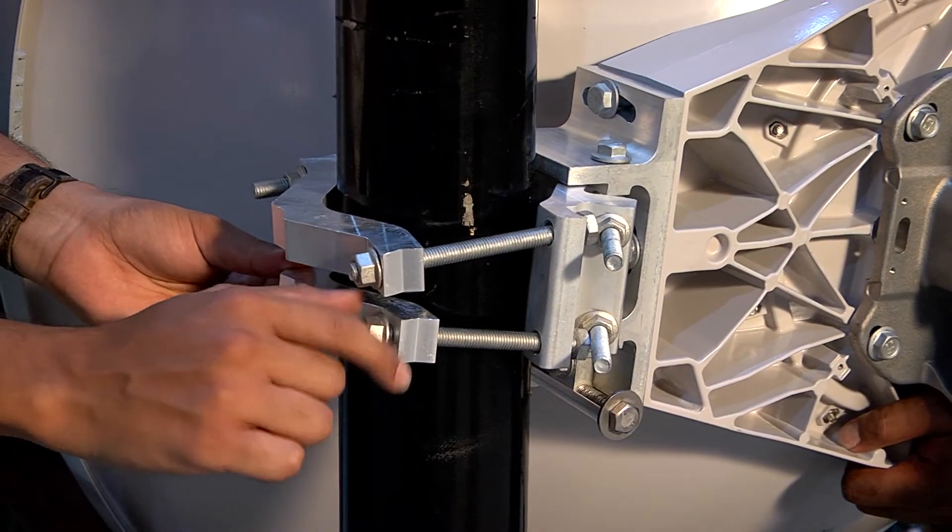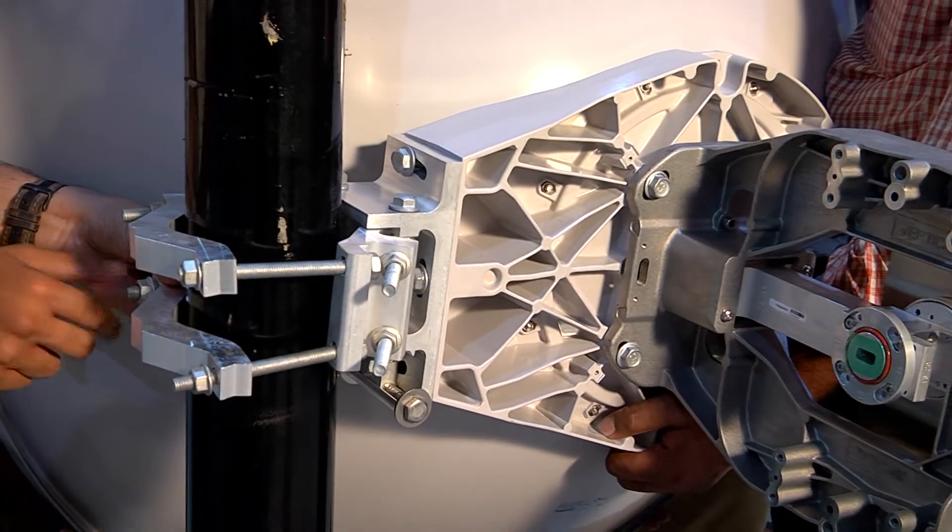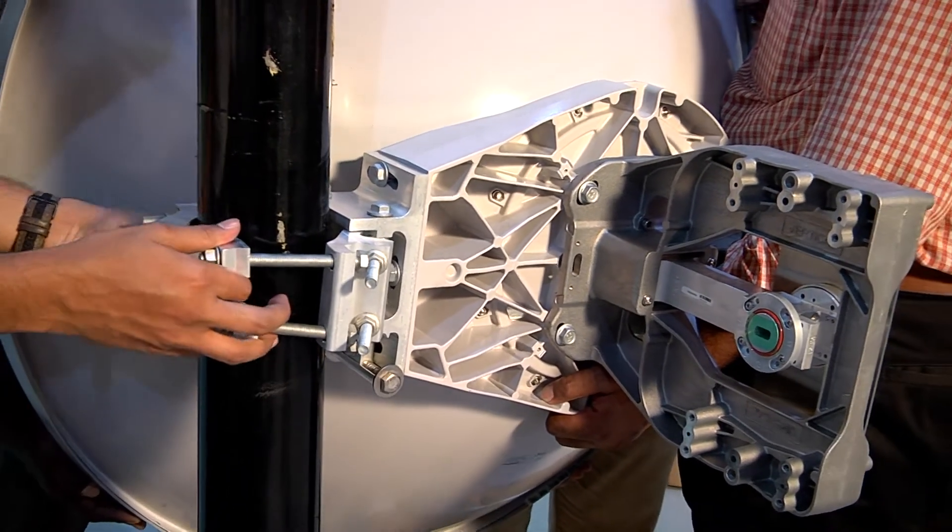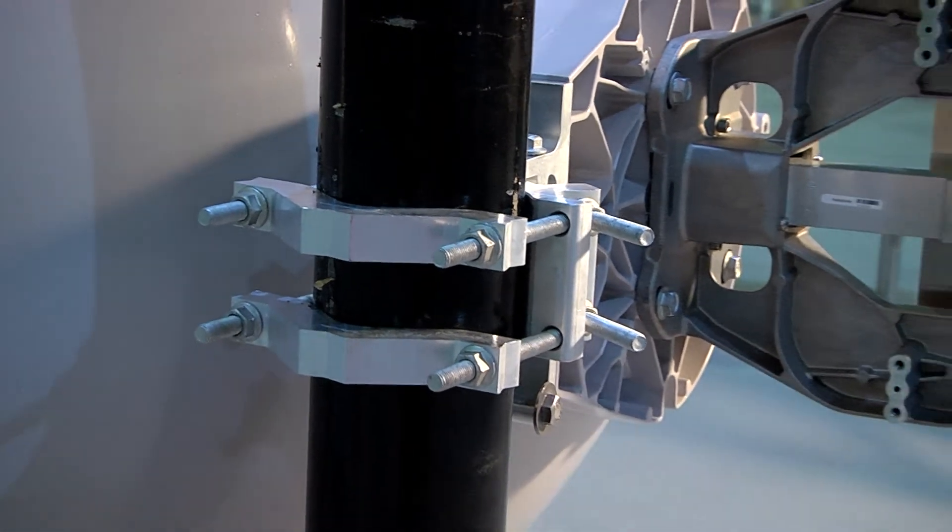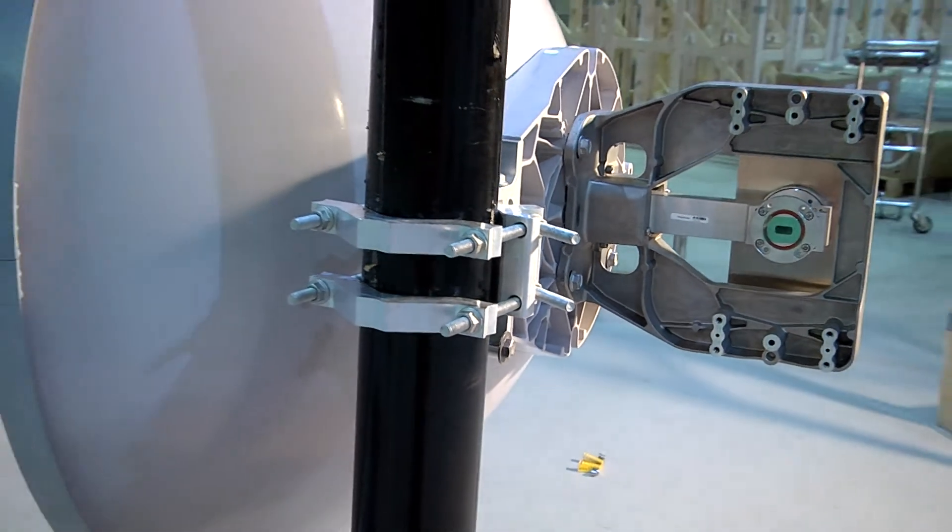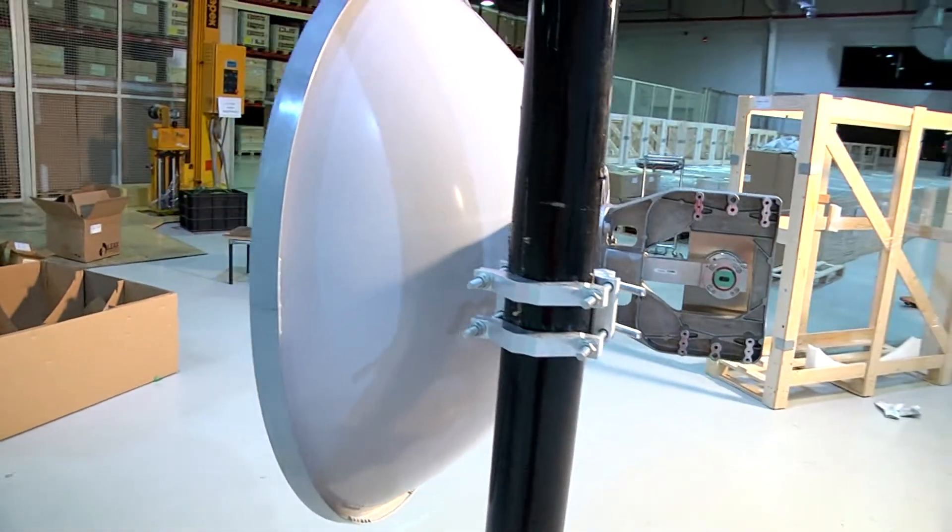Once this is done, the nuts are tightened using a torque of 49 nanometer from a torque wrench. Now the 0.9 meter antenna is assembled and mounted and ready for use.